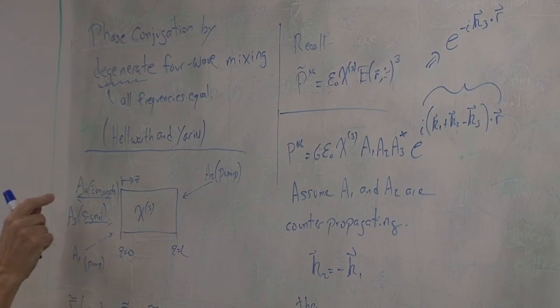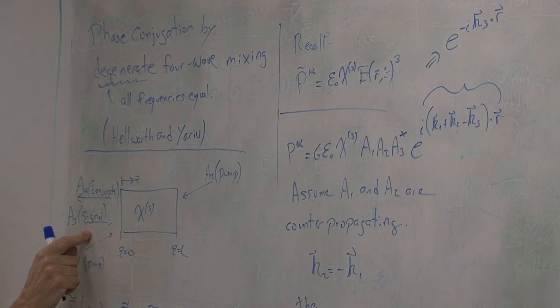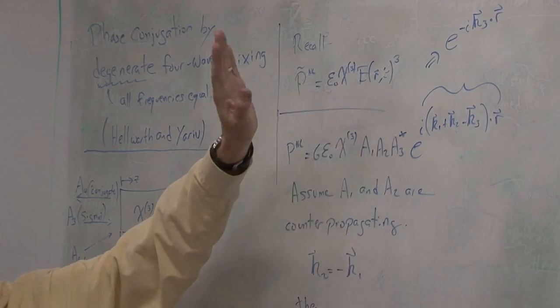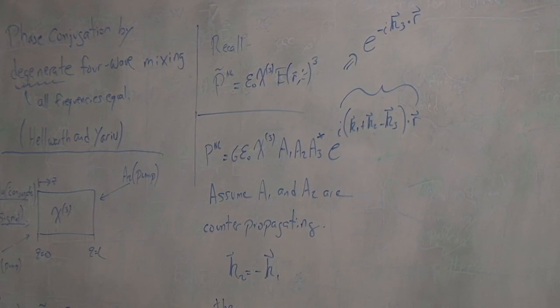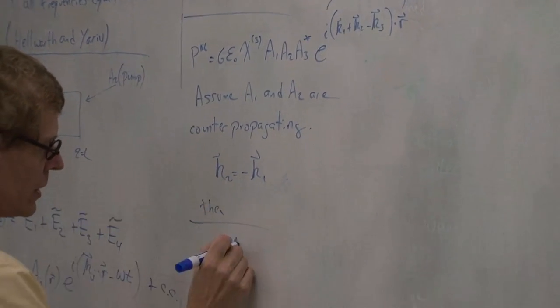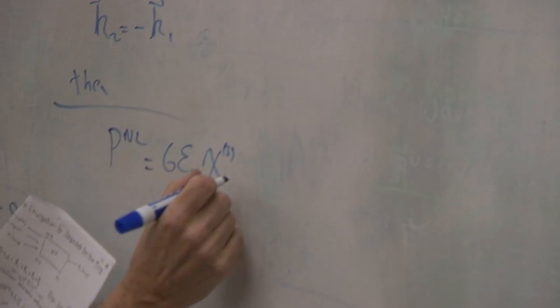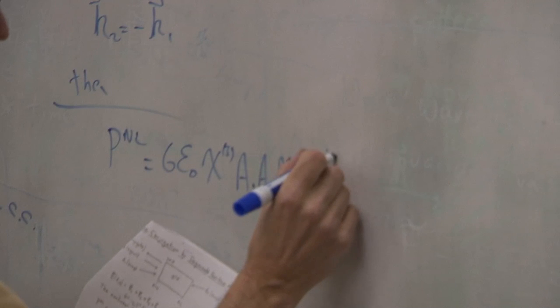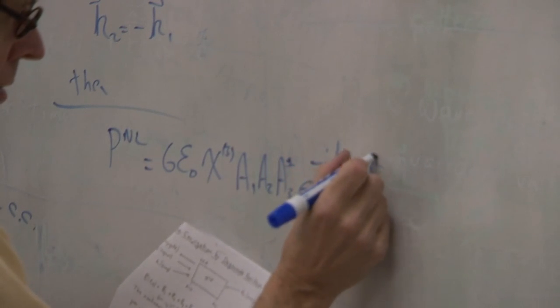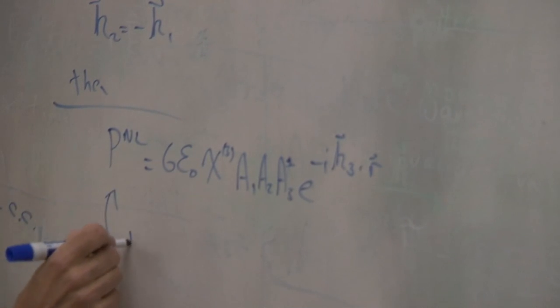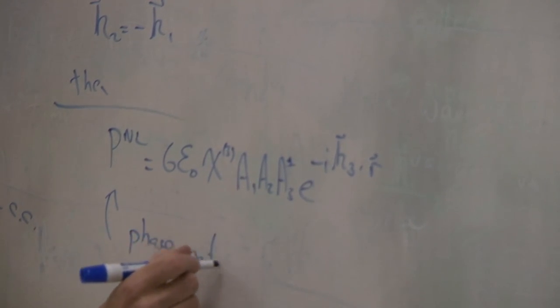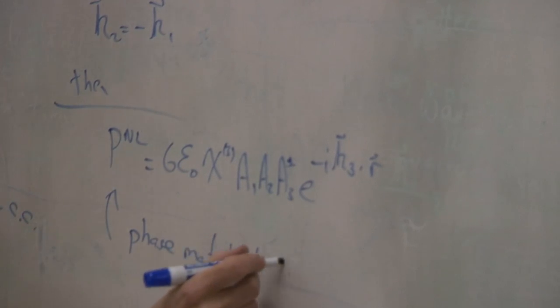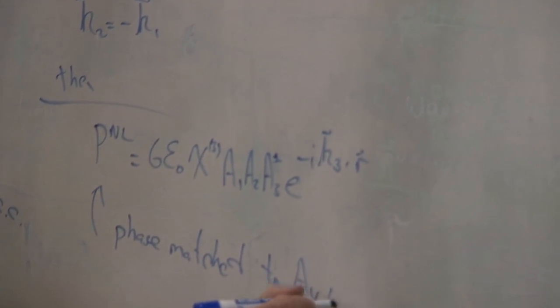In order for this to be a phase conjugate mirror, you want A4 to come out in the opposite direction as A3, and you want it to have the proper wavefront structure. By choosing the pumps to be counterpropagating, this fulfills all those requirements. P_nonlinear = 6ε₀ χ³ · A1 · A2 · A3* · exp(−i K3 · r). Another way to say this is that this is phase matched to the A4 wave.